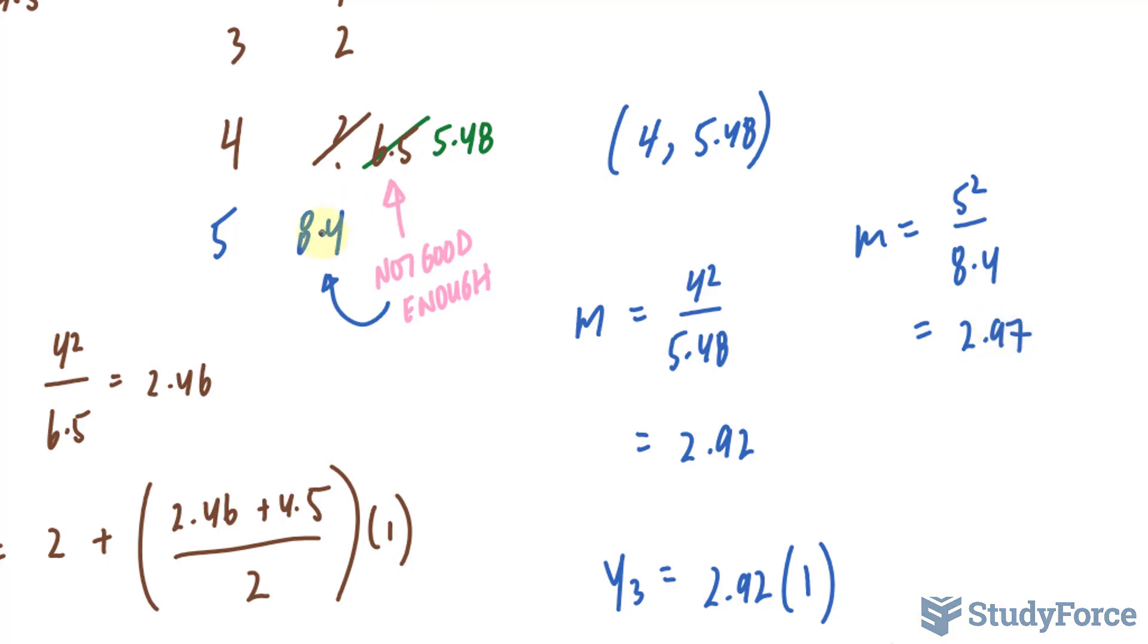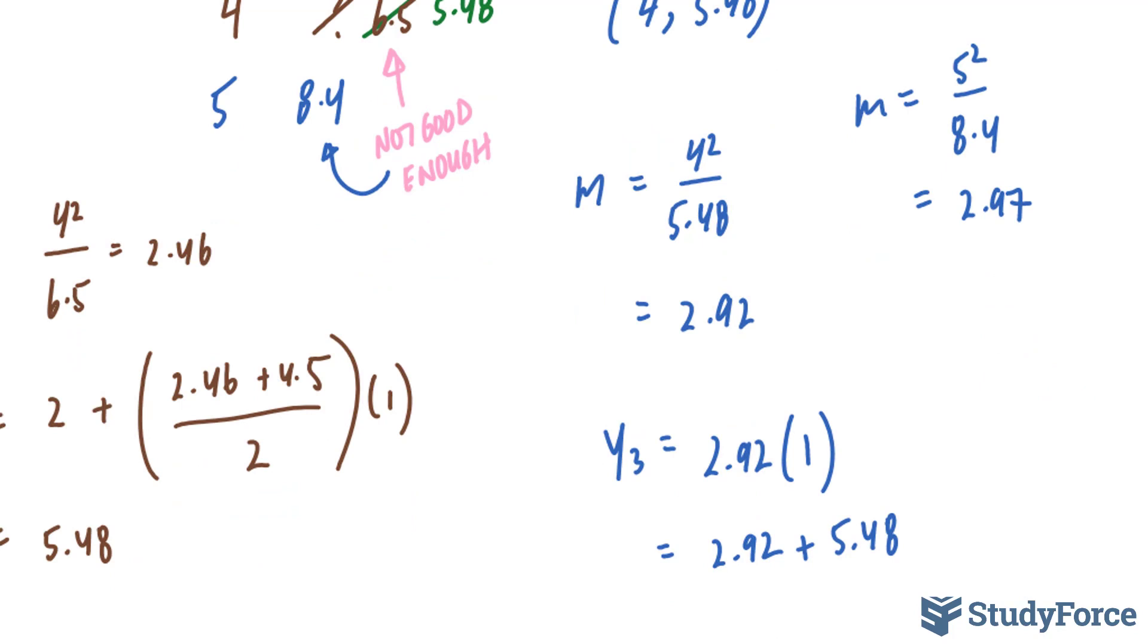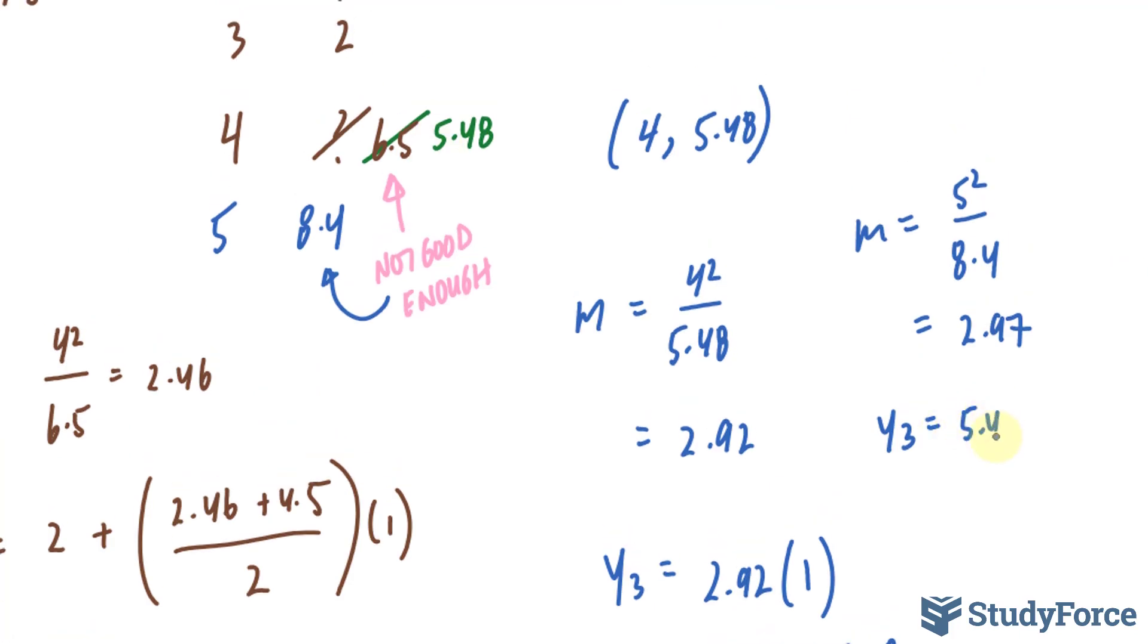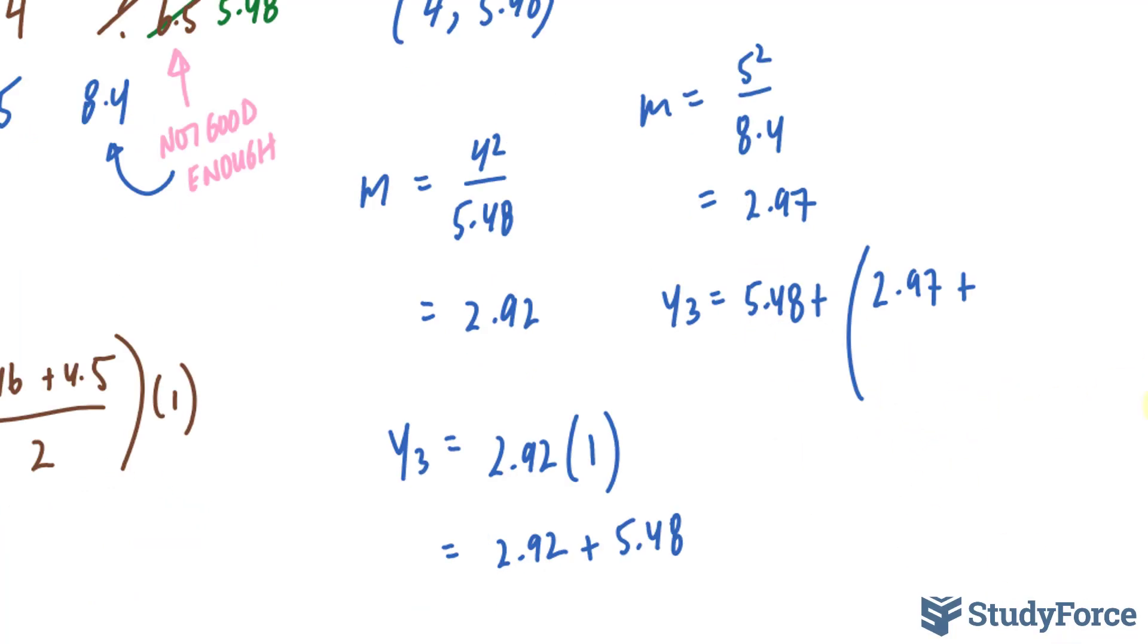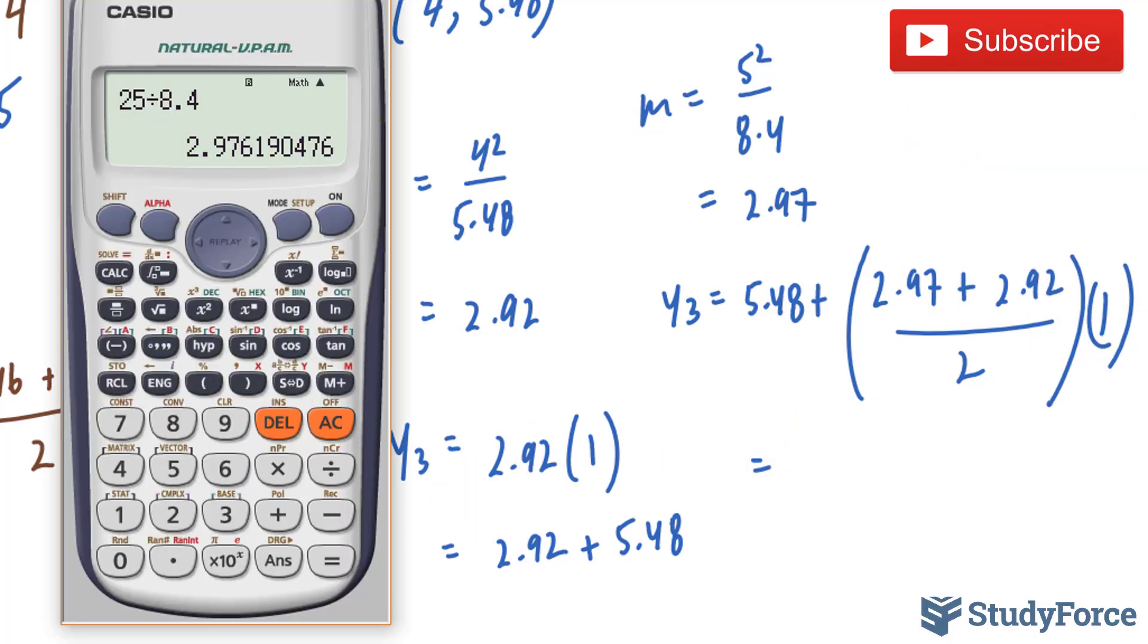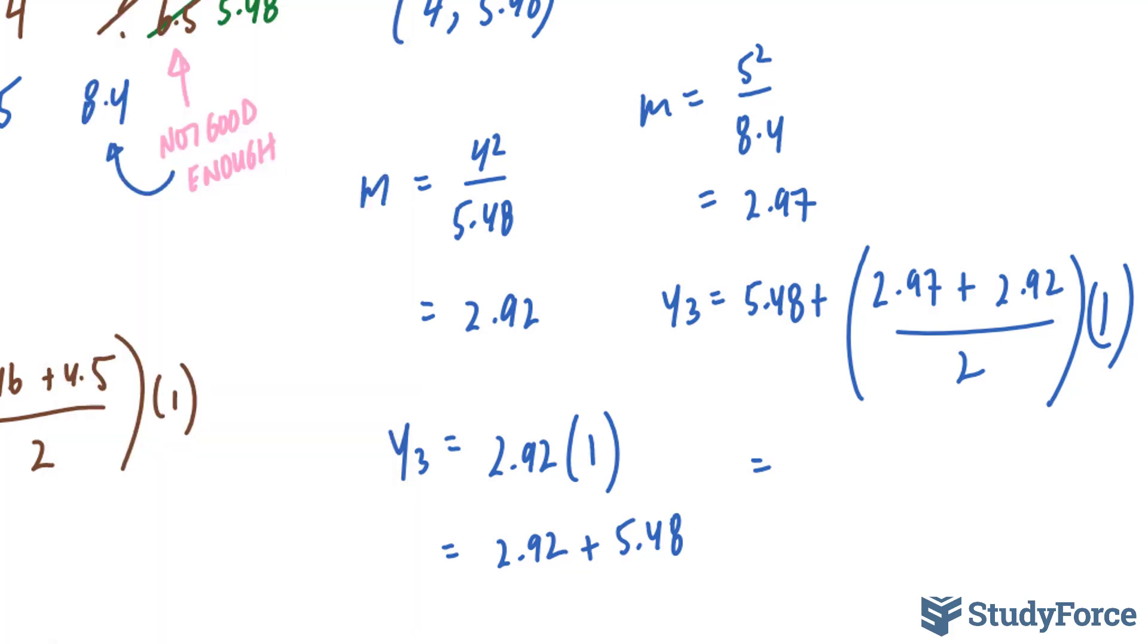Now, this is not good enough, so we will use the exact same formula as before, but instead of y₂, it will be y₃. y₃ = our previous y, which was 5.48, plus the average of the two previous slopes: 2.97 + 2.92, divided by 2, times 1. Let's see what the corrected ordinate will be: 5.48 + (2.97 + 2.92)/2, and we get a corrected value of 8.425.